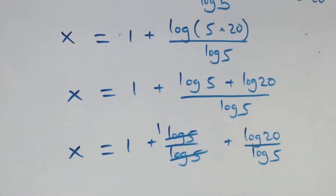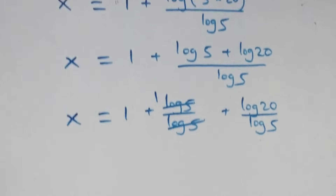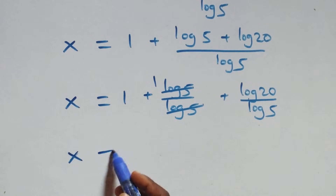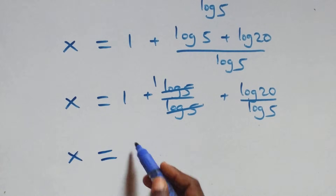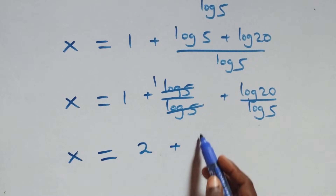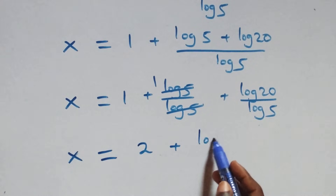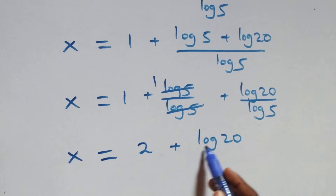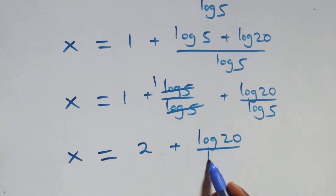Log 5 cancels each other — we have one left. Which implies x equals to 1 plus 1, that's 2, and plus log 20 over log 5.